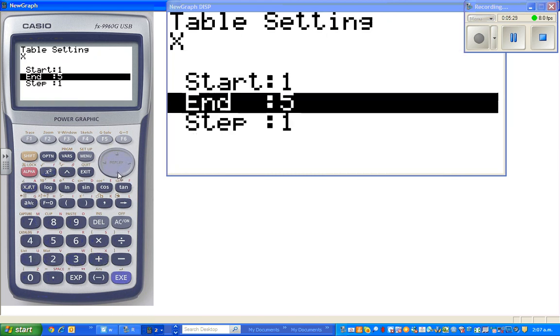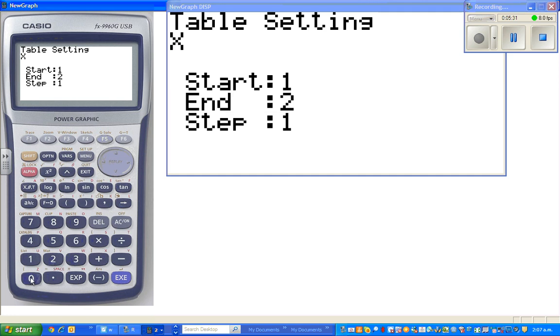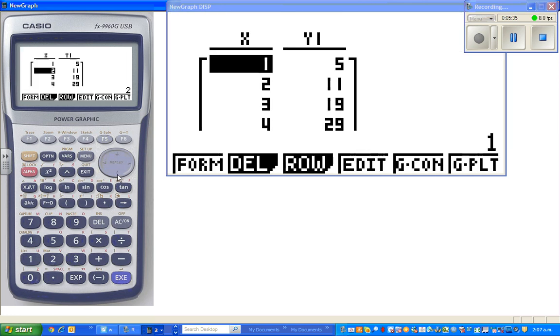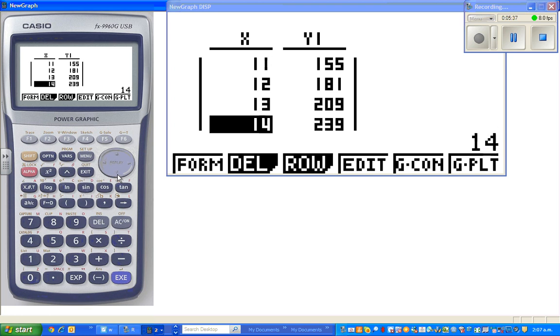And I'll set from 1 to 20. And 20 should give me 461. So let me scroll down. Here we go. When N is 20 or x is 20, T is 461. Now I'll show you how to do this another way.